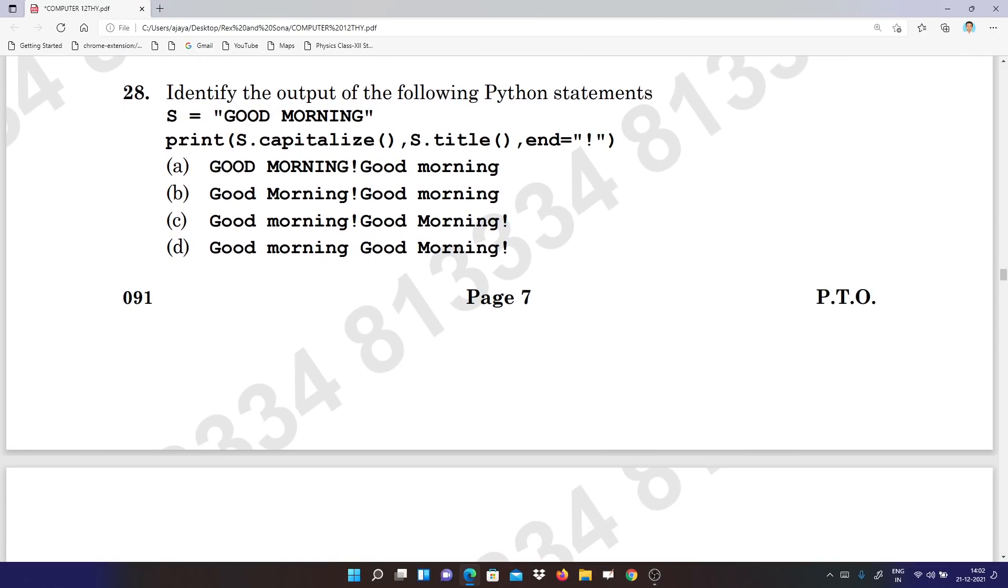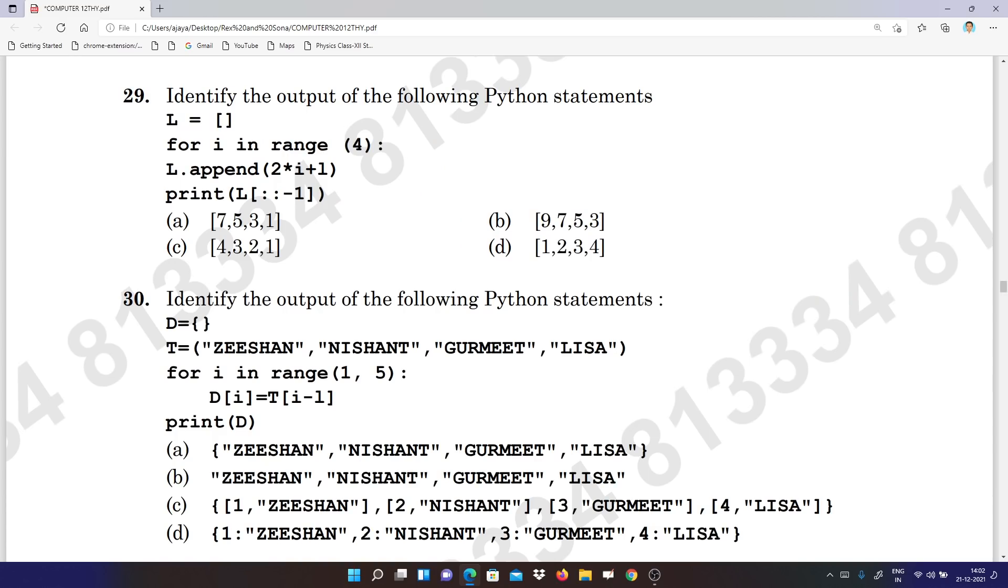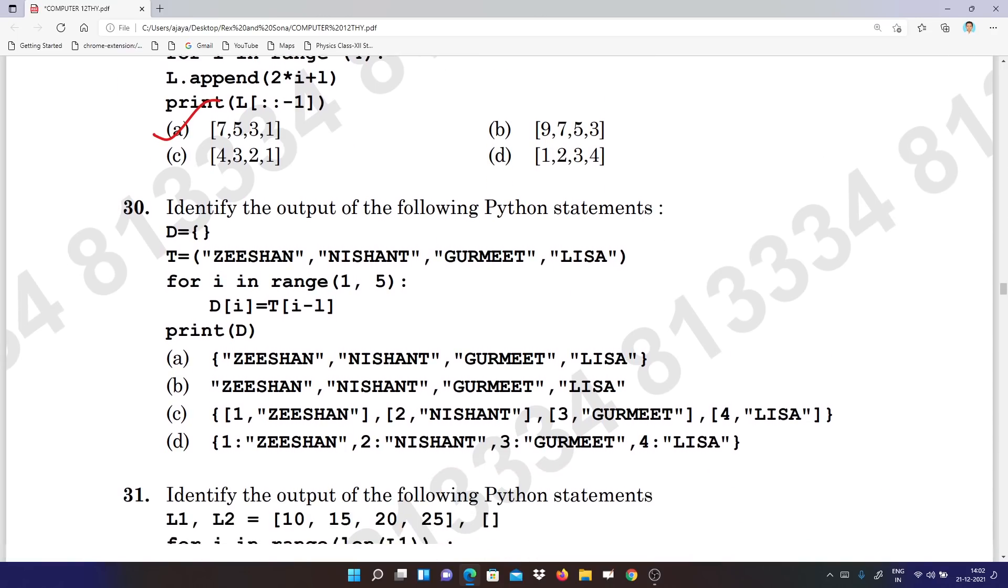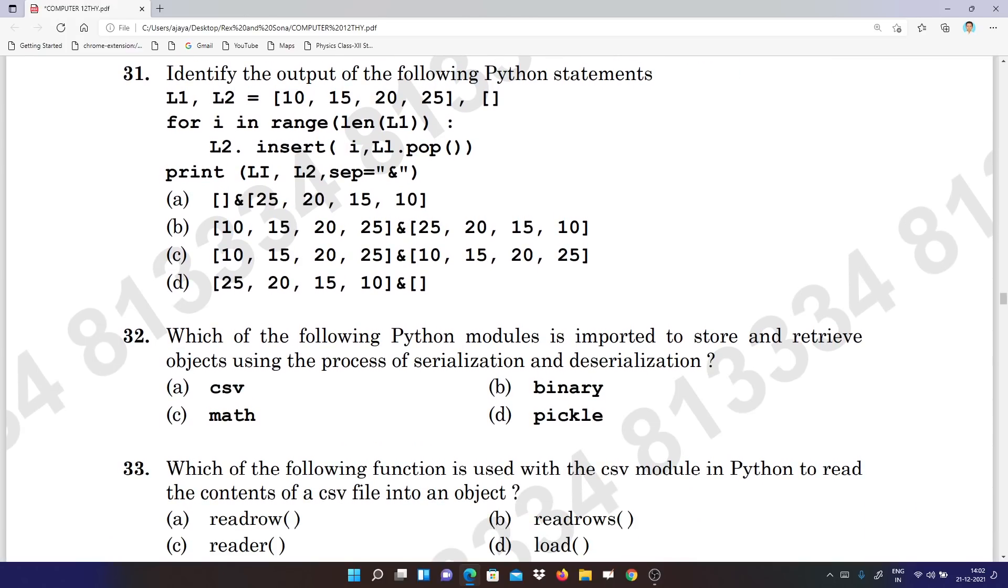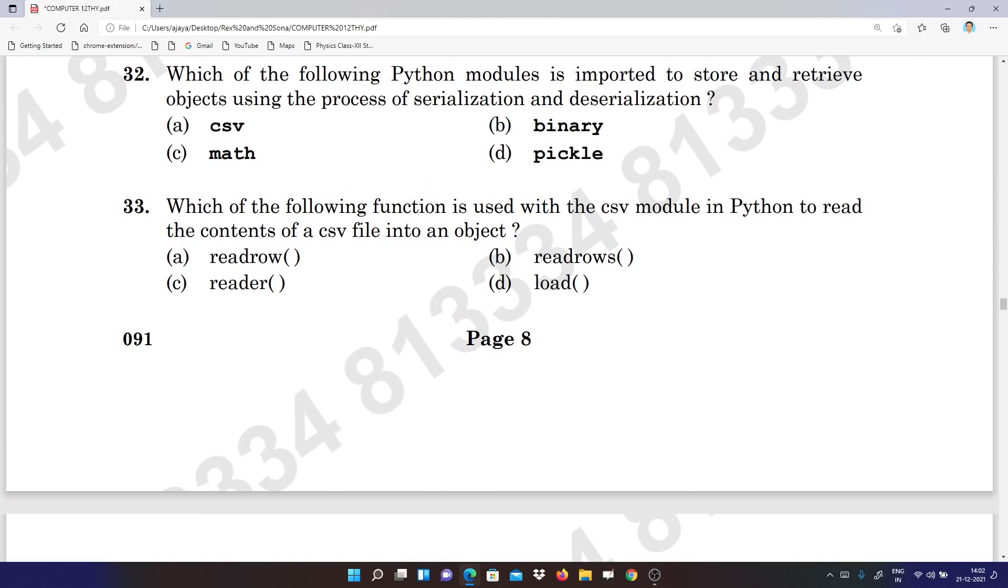Twenty-eight: D. Twenty-nine: D. Thirty: D. Thirty-one: A. Thirty-two: D.